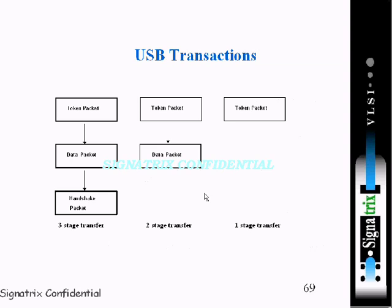Now let's look at USB transactions — how these transactions happen. We have the token packet, the data packet, and the handshake packet. This is a three-stage transfer: the first stage is the token, the second is the data, and the third is the handshake. Together, this full three-stage transfer constitutes one transaction.